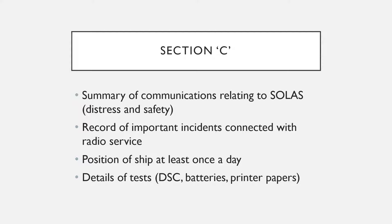Make sure you put the position of the ship at least once a day — normally there is an officer designated to do that at the same time each day. Certain tests are also carried out and entries made: for example, Digital Selective Calling tests, battery tests, or checking printer paper. You make an entry of these checks and tests carried out on a daily basis, along with the ship's position. An officer is designated to carry out such tests and make entries in Section C daily.